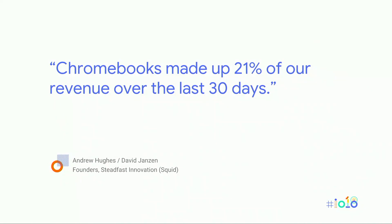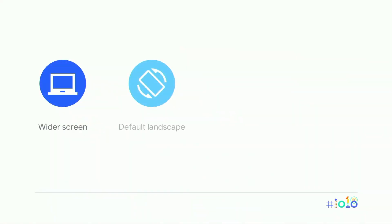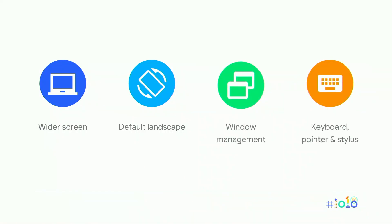To begin, we're quickly going to review some basics. Ensuring that an app works well on Chrome OS comes down to four key differences between Chromebooks and phones: wider screens, default landscape, window management, and different primary input devices — keyboard, pointer, stylus.